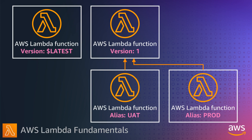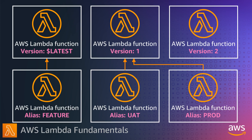A Lambda alias is like a pointer to a specific function version. You can access the function version using the alias ARN. Each alias has a unique ARN and can point only to a function version, not to another alias. You can update an alias to point to a new version of the function. In this example, my stable version is version 1 with a prod alias and a UAT alias pointing to it. I can have multiple aliases pointing to a function version. I publish a new function version which automatically gets the $LATEST label, and I have a feature alias pointing to it. I can test the new version and then point my production alias to version 2 so my users safely get the new functionality.